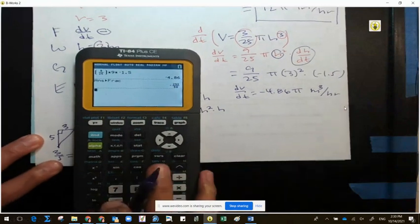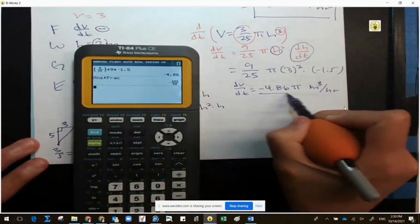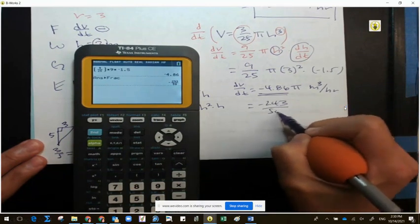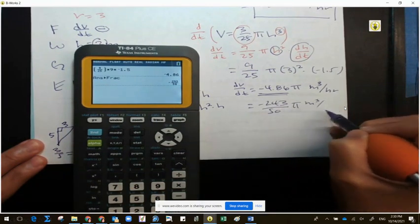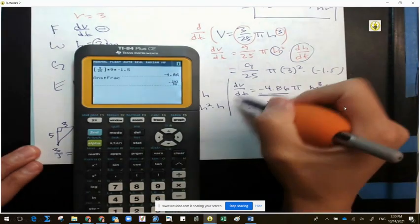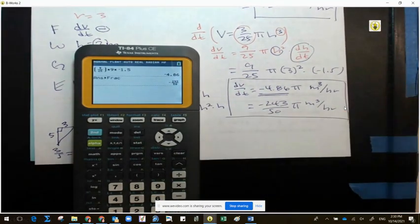And if you're like, well, I didn't know it could be decimal and you want to make it into a fraction, you can write negative 243 over 50 pi meters cubed per hour. And again, if I say three decimal places, that is understood to multiply out the pi. Are we all set on this one?